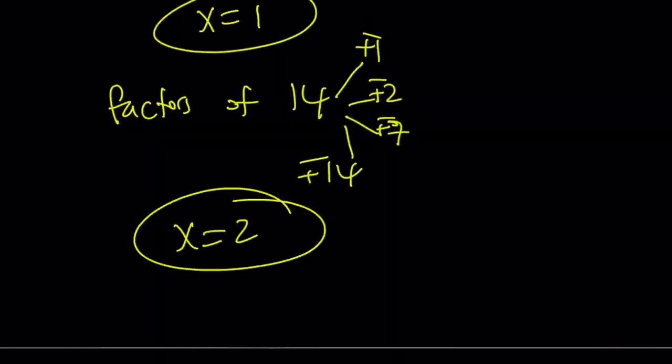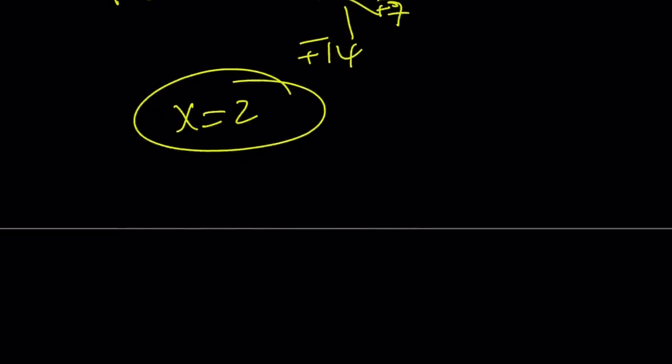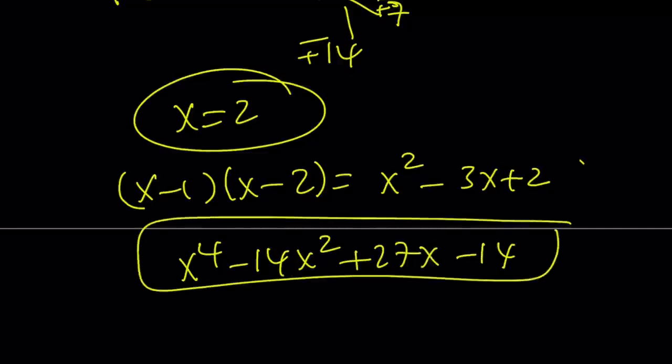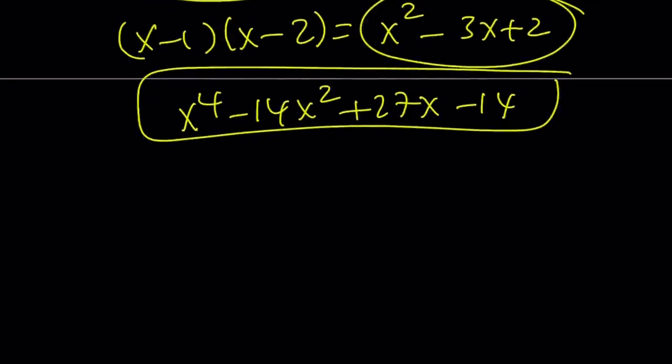x equals 2 is another solution. How do I know that? I checked it for you. If you plug it in, you're going to see that it works. So those are the two solutions. That's going to give us a quadratic, and the answer is quartic, so we'll get the other quadratic. If you multiply these two, you get x squared minus 3x plus 2, and our original quartic is x to the 4th minus 14x squared plus 27x minus 14. If you divide this quartic by that, you're going to get the other quadratic.